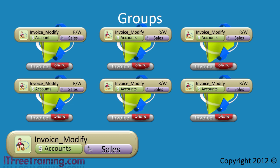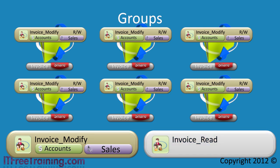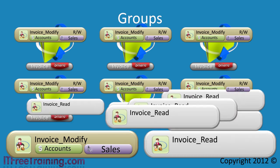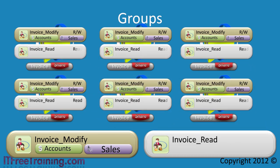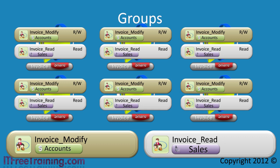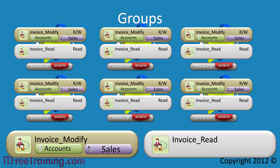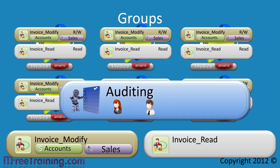When the request comes through to change the sales group to read only, you create a new group called invoice read. The invoice read group is assigned to all the invoice shares with read access. Once this is done, take the sales group out of invoice modify and put them in invoice read. When the request comes through to give the sales group write access to the invoice shares again, all the hard work is already done — all that needs to be done is to move the sales group from invoice read to invoice modify. Lastly, when the request comes through to give the audit group read access, since the group invoice read has already been created and permissions assigned, the audit group is created and added to the invoice read group.